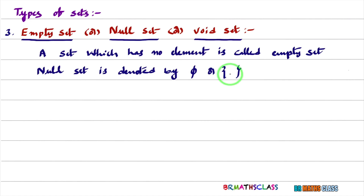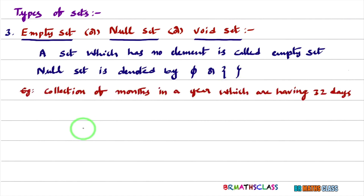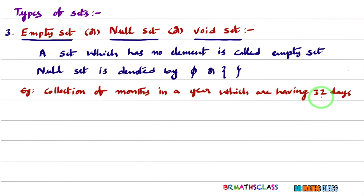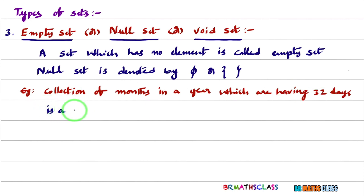We will try to understand this null set with an example. Consider: collection of months in a year which are having 32 days. We know that in a year 12 months are there, but we don't have any month which has 32 days. So, collection of months in a year having 32 days is a null set, because we won't find any element in this set.